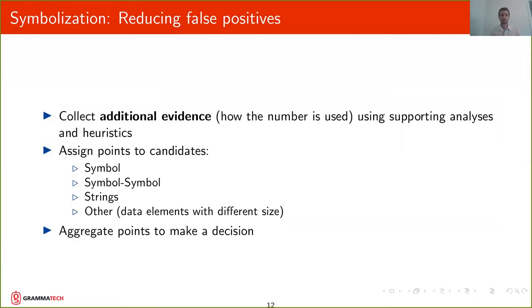For false positives, we want to reduce the number of false positives. And the way we do that is we want to collect additional evidence of how numbers are used using supporting analysis and heuristics. And then using this additional evidence, we're going to assign points to the candidates, whether it's a symbol, a symbol minus symbol, a string, or other data elements with a different size. And again, as in instruction boundary identification, we're going to aggregate the points to make a decision.